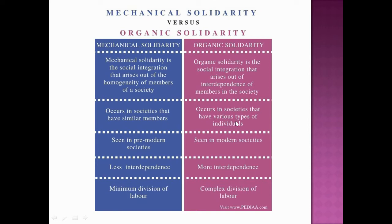Organic solidarity occurs in societies that have various types of individuals — where there is no homogeneity but rather heterogeneity and diversity. People are different from each other but they depend upon each other. Such societies are modern and industrial societies, whereas pre-modern societies have mechanical solidarity.